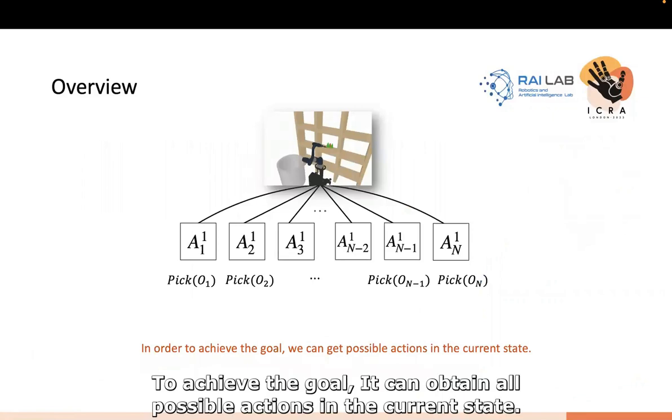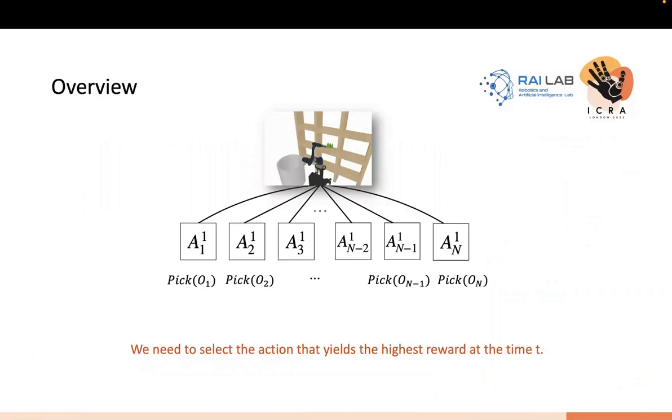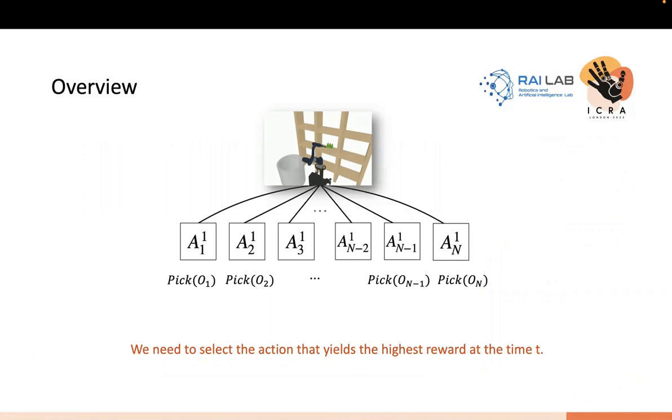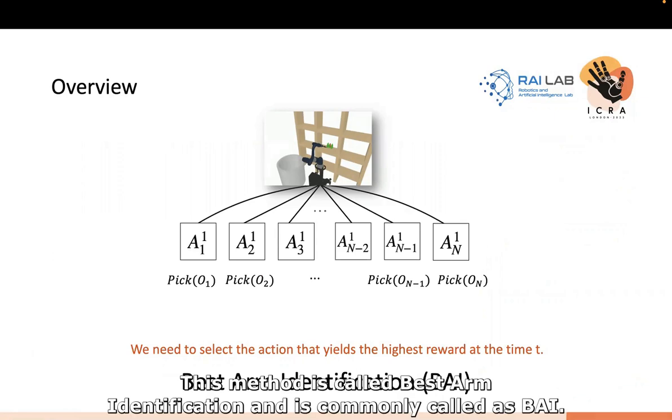To achieve the goal, we can obtain all possible actions in the current state. To find the optimal sequence of actions, we need to select the action that yields the highest reward among these actions. This method is called best arm identification, commonly called BAI.